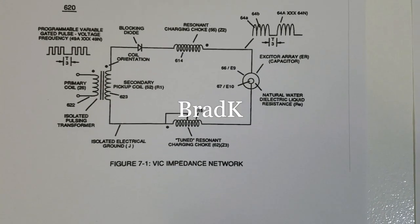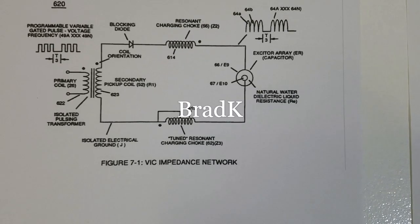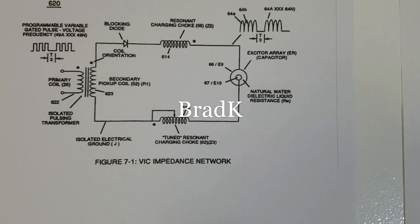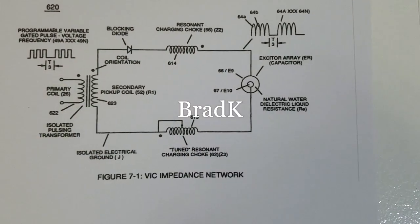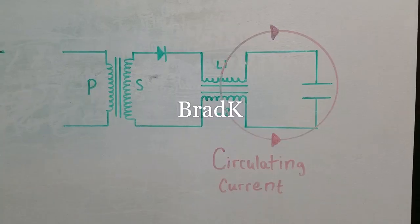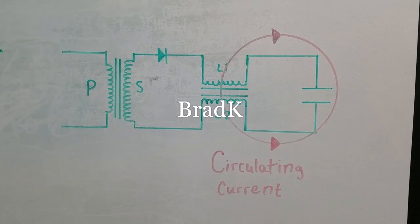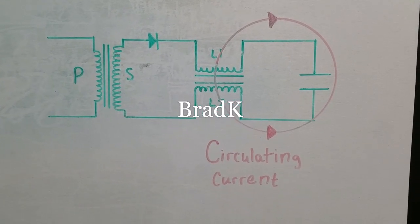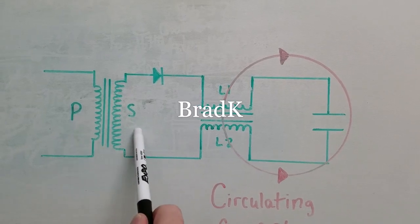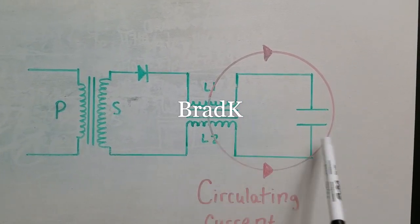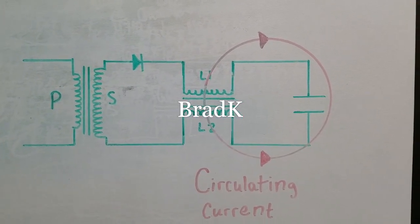Now going back to this diagram, this is one reason why so many people have said, it can't be an AC circuit. You've got a diode right here. How can you have AC with a diode? In my opinion, this is the way we need to look at the VIC. The diode actually isolates the primary and secondary coils from the chokes in the water fuel cell.